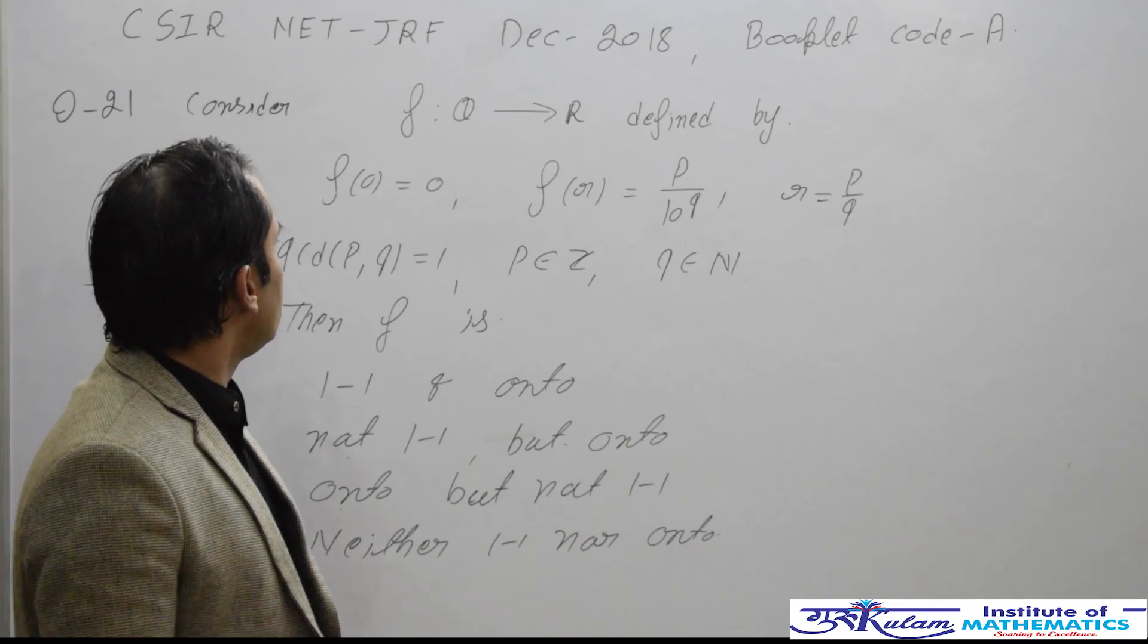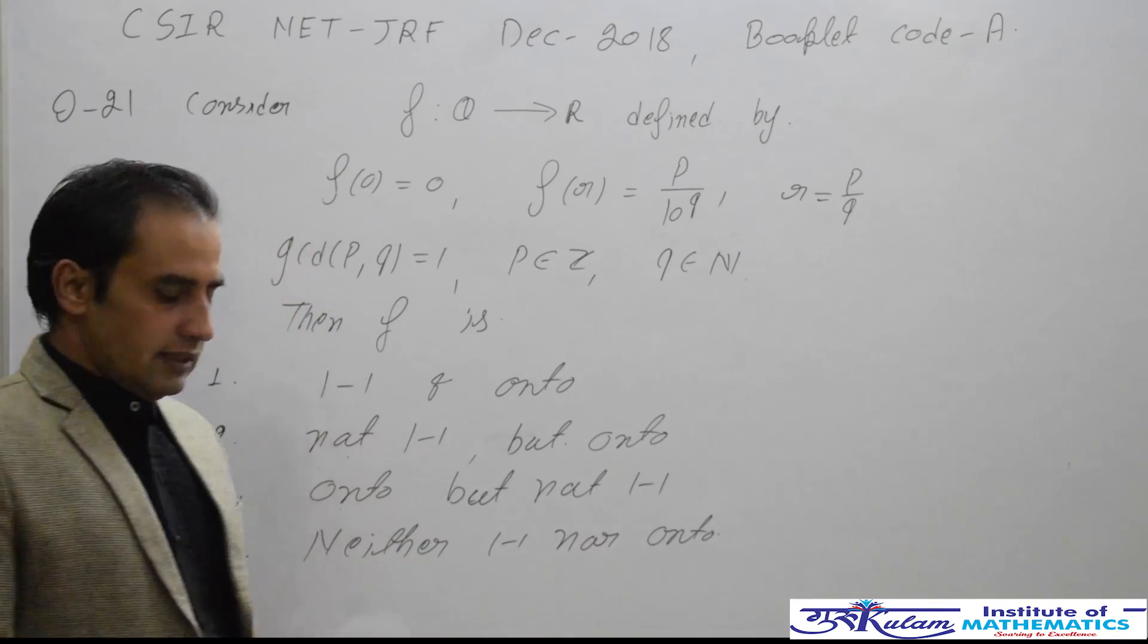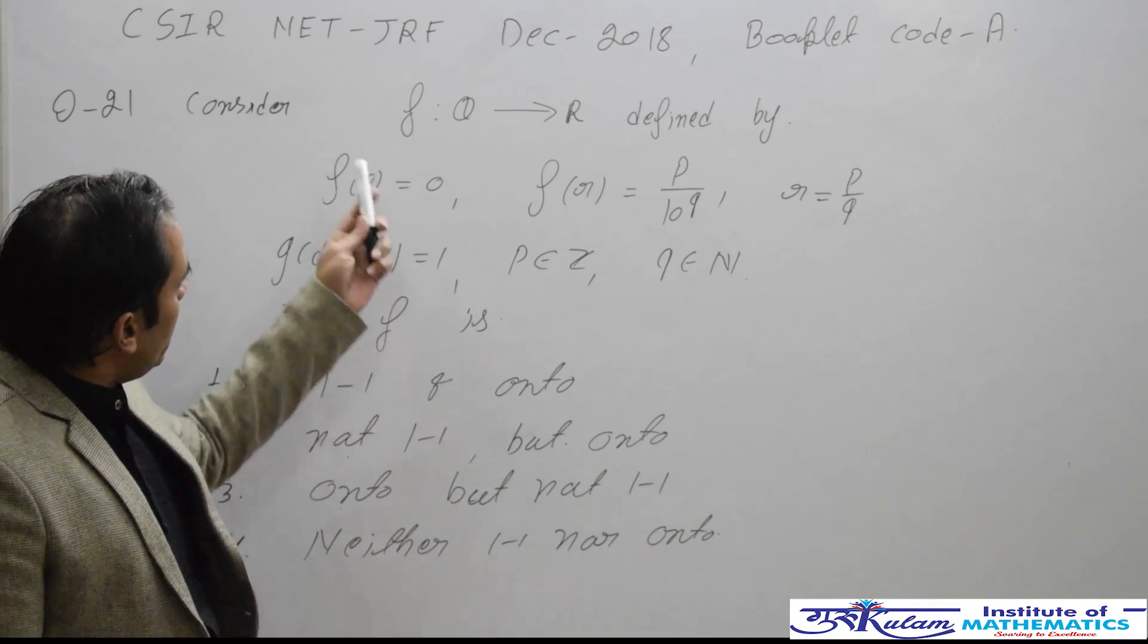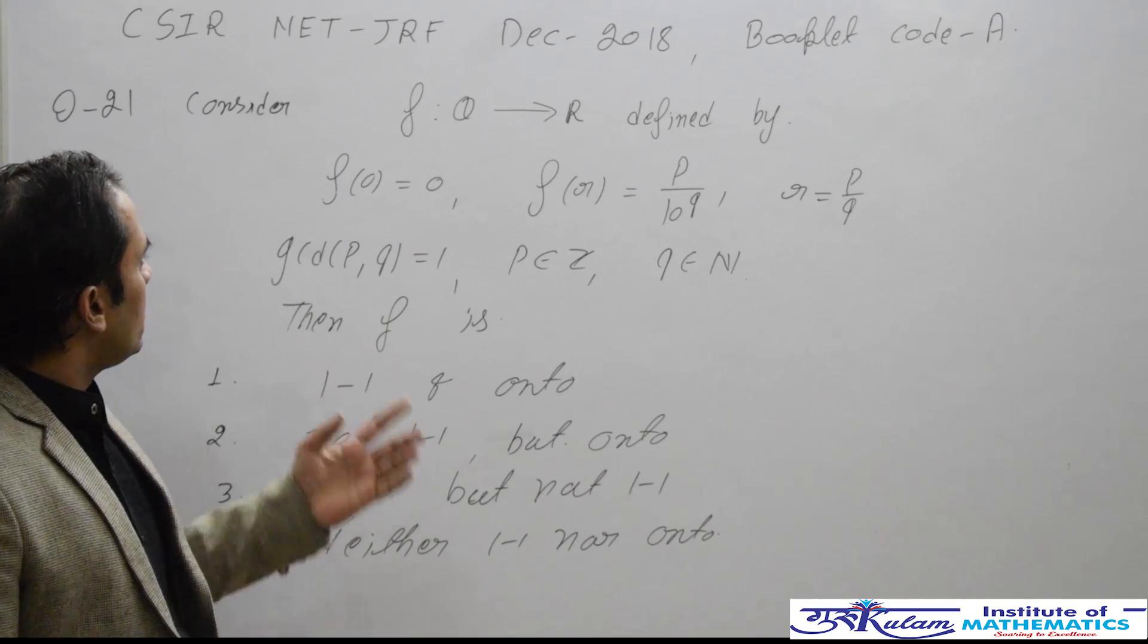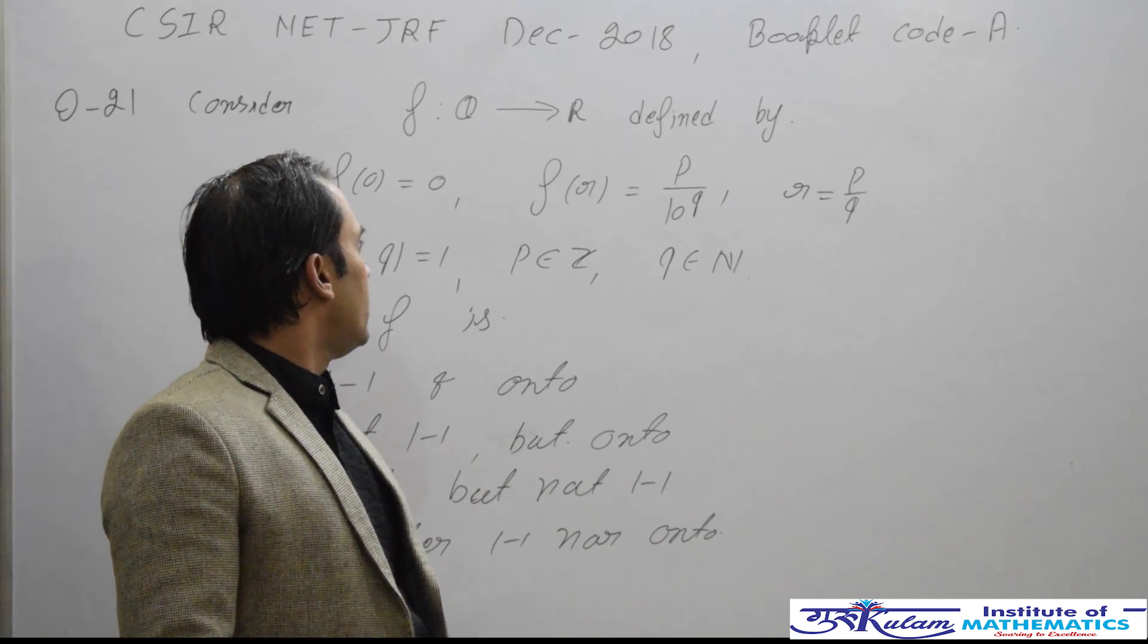This question is from real analysis. Consider the mapping f from Q to R, where Q is the set of rational numbers and R is the real line.